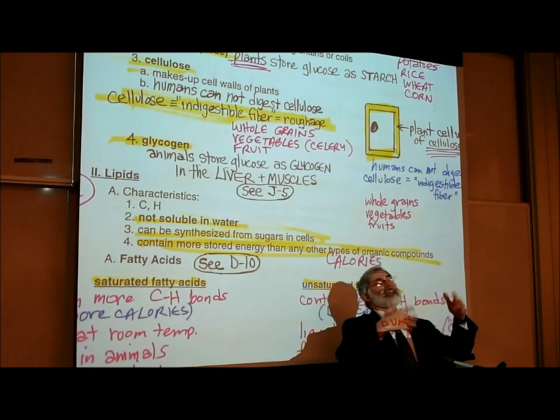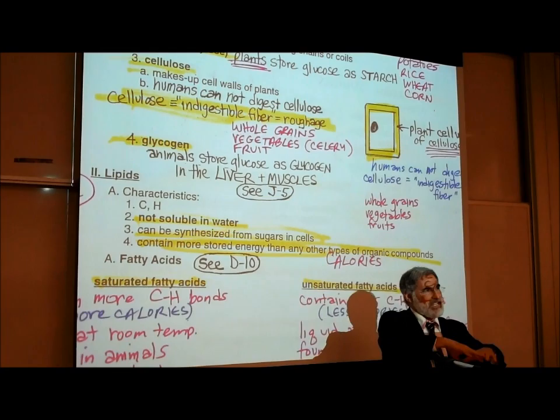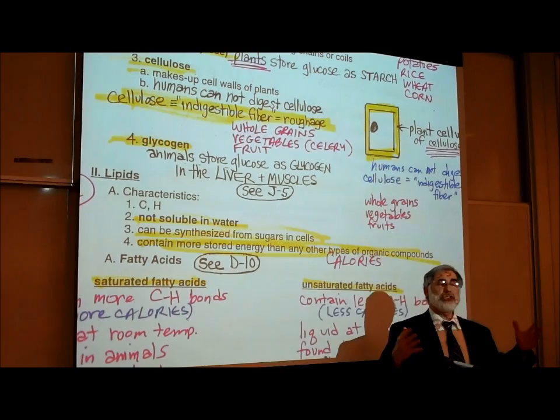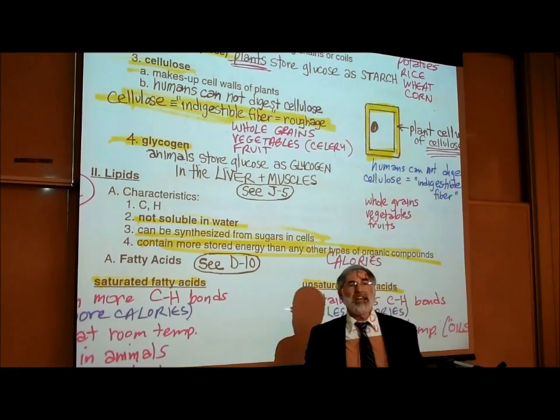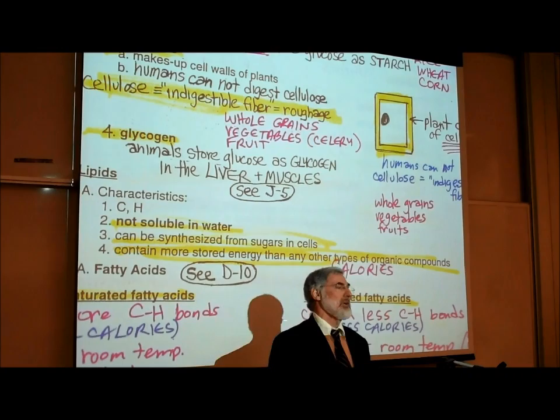The purpose of starch or amylose is that plants join sugars together into this polysaccharide called starch and store it in the potato, corn, rice, and so on. Well, what many animals do, including us, is when we ingest foods with sugars, we store sugars by joining them together into a polysaccharide called glycogen. These sugars are primarily stored as glycogen in your liver and muscles — we refer to this as liver glycogen and muscle glycogen.